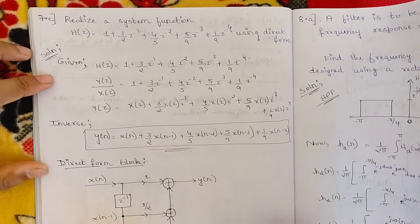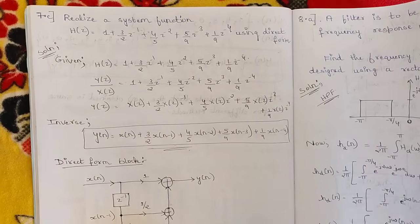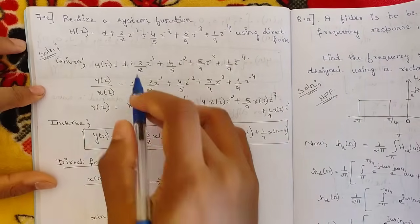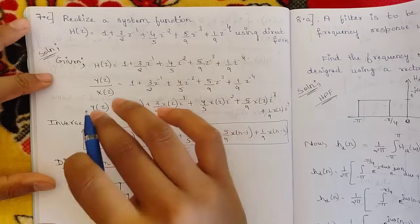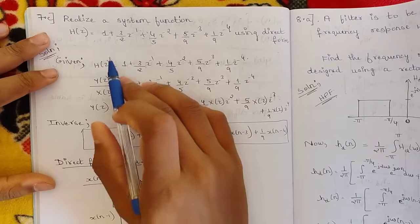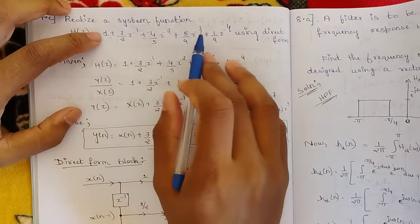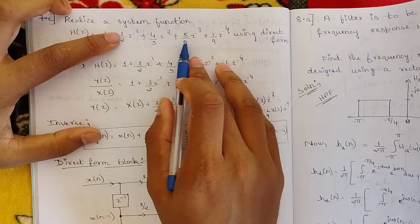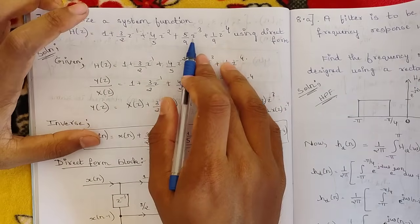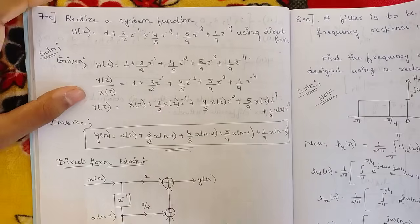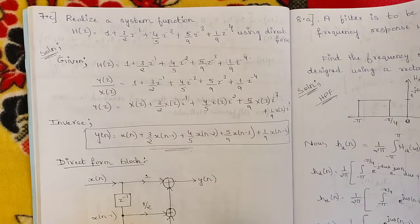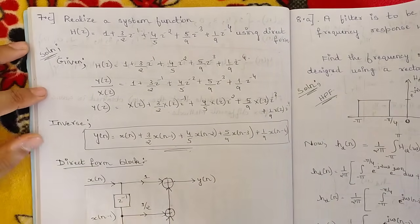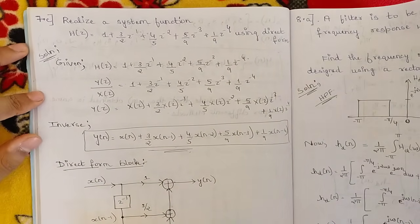As covered in theory class, first you should check for the linear phase condition. The linear phase condition states that the first and last term coefficients should be the same, and the second and second-last coefficients should be the same. Only if this condition is satisfied do we write a different structure of direct form.